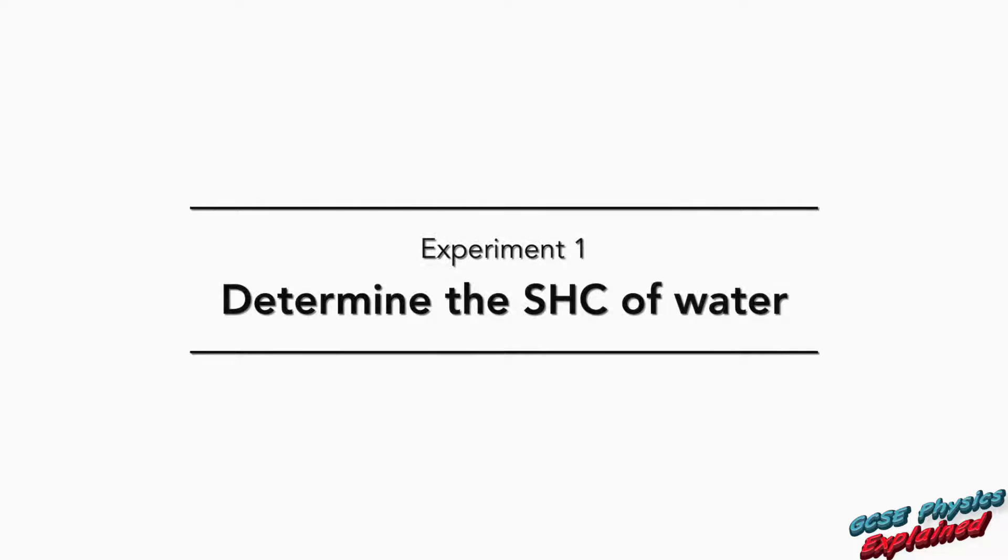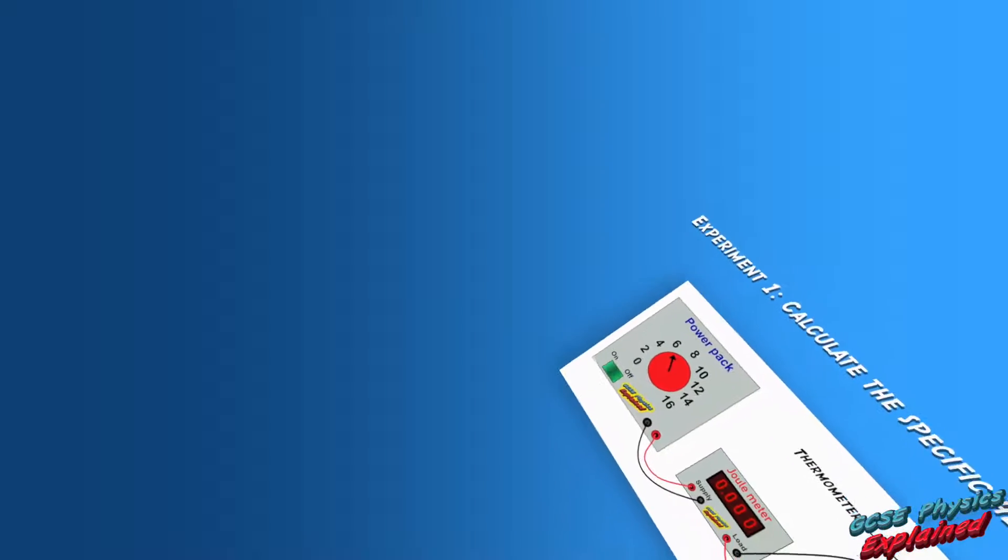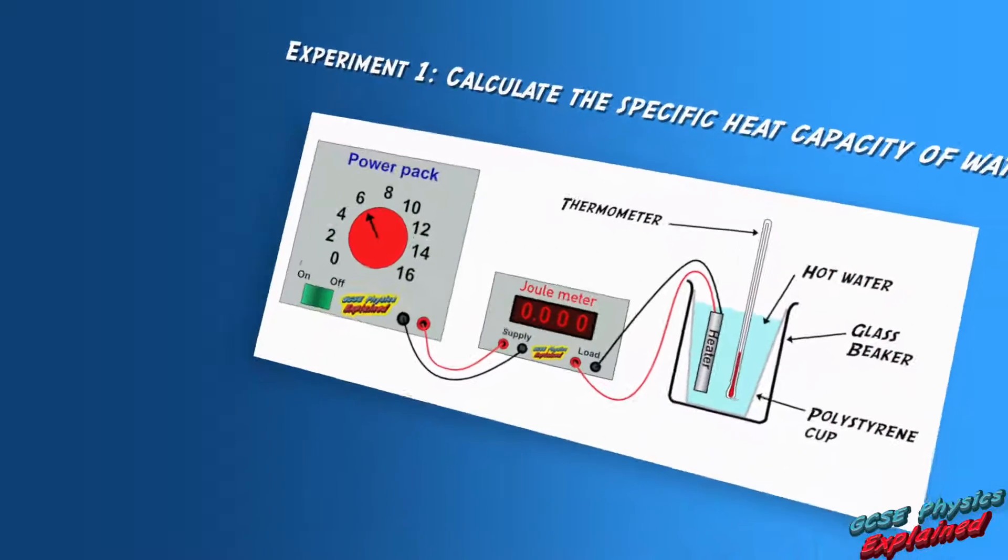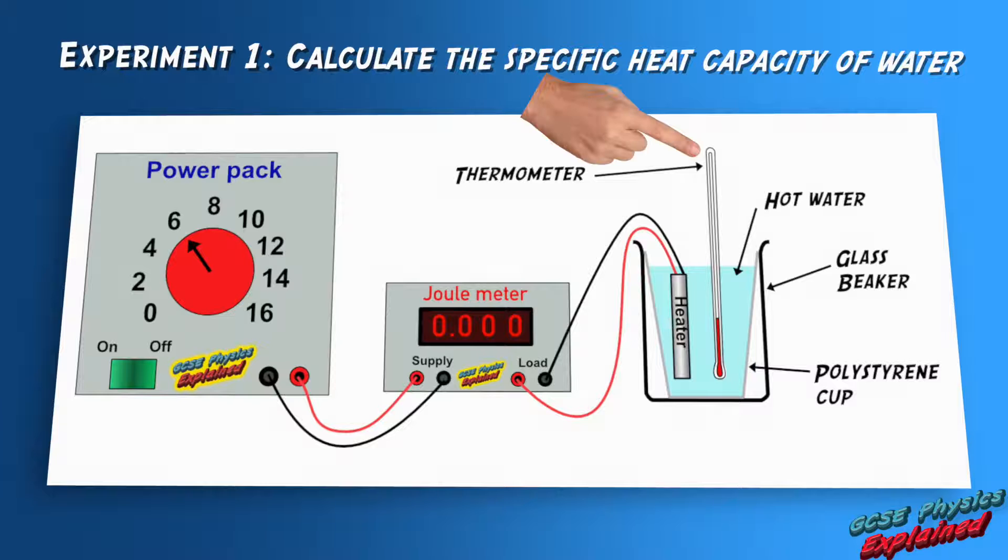Experiment 1. Determine the specific heat capacity of water. In the first experiment we need to calculate the specific heat capacity of water by monitoring the temperature of water using a thermometer while heating it using a heat supply connected to a joule meter.